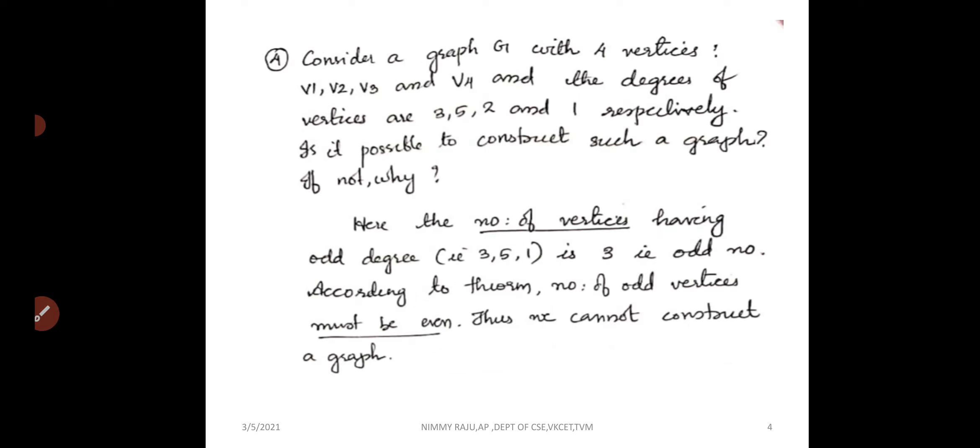Consider a graph with 4 vertices V1, V2, V3 and V4 having degree 3, 5, 2 and 1 respectively. Is it possible to construct such a graph if not why? So here we have 4 vertices V1, V2, V3 and V4 and having degree 3, 5, 2 and 1.